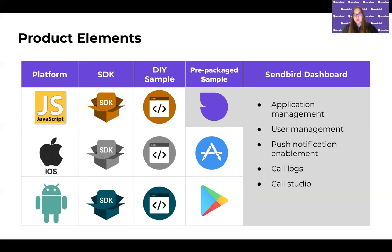The SendBird dashboard is where you can manage all the information about your application and the users inside it. You can enable push notifications, which is strongly recommended if you have users on mobile so they can receive calls while their app is in the background or closed. You'll also be able to see call logs. And the calls studio is really cool — you'll be able to call another user right from the dashboard as a test user, simulate that call, and test that everything is working for you.